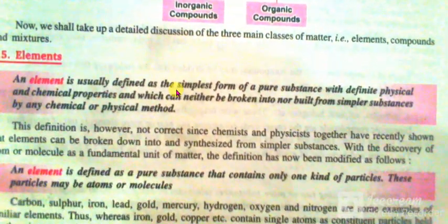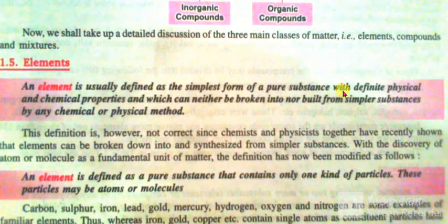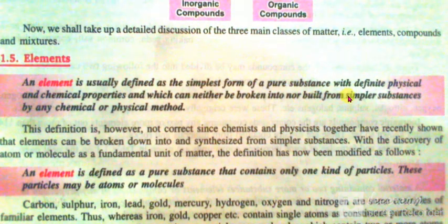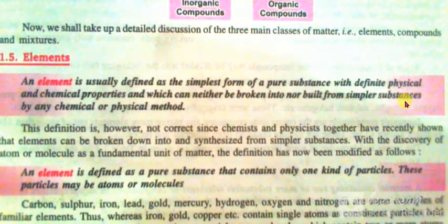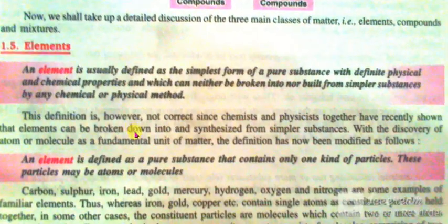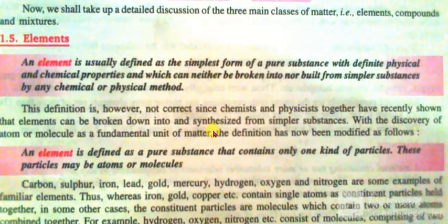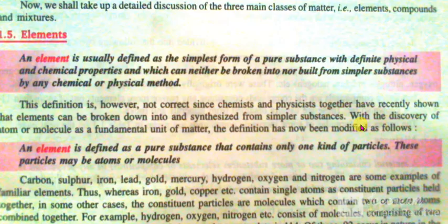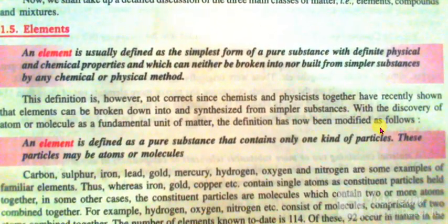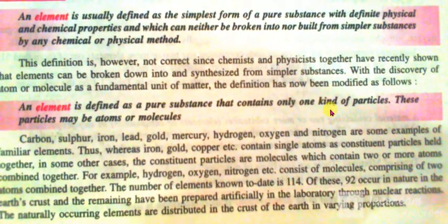Elements. An element is usually defined as the simplest form of a pure substance with definite physical and chemical properties, which can neither be broken into nor built from simpler substances by any chemical or physical methods. However, this definition is not entirely correct, since chemists and physicists have recently shown that elements can be broken down into and synthesized from simpler substances. With the discovery of atoms and molecules as fundamental units of matter, an element is now defined as a pure substance that contains only one kind of particles.